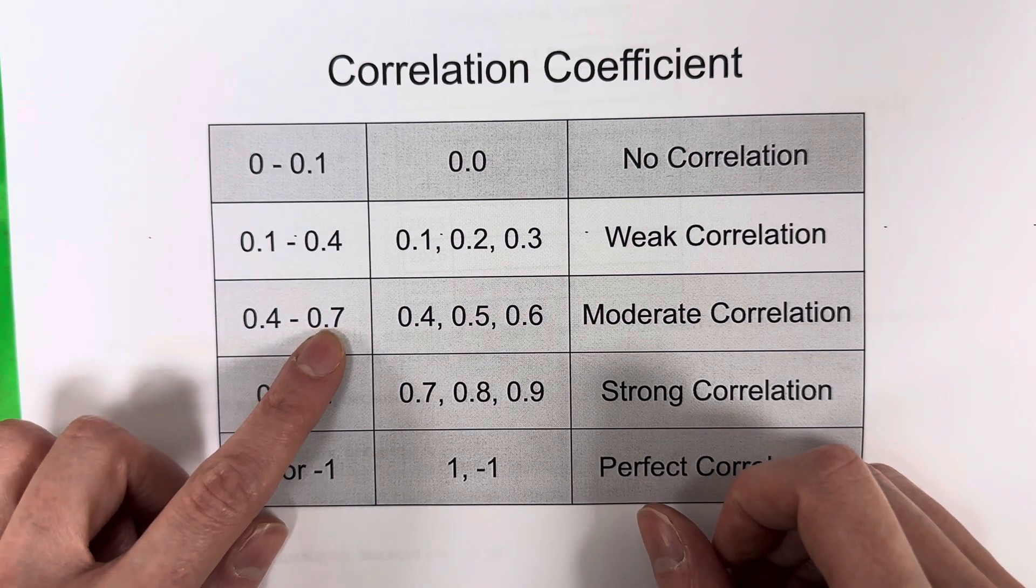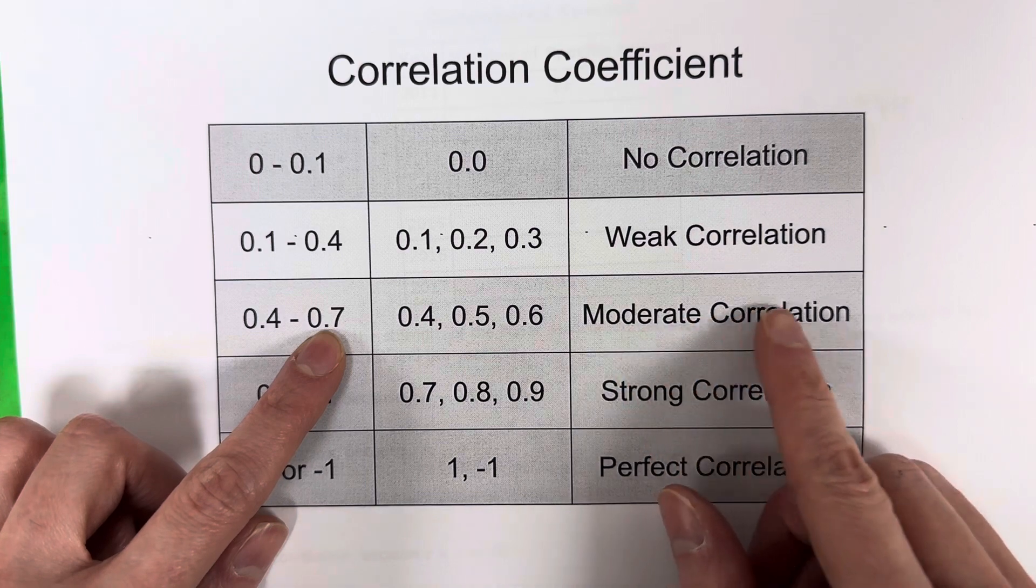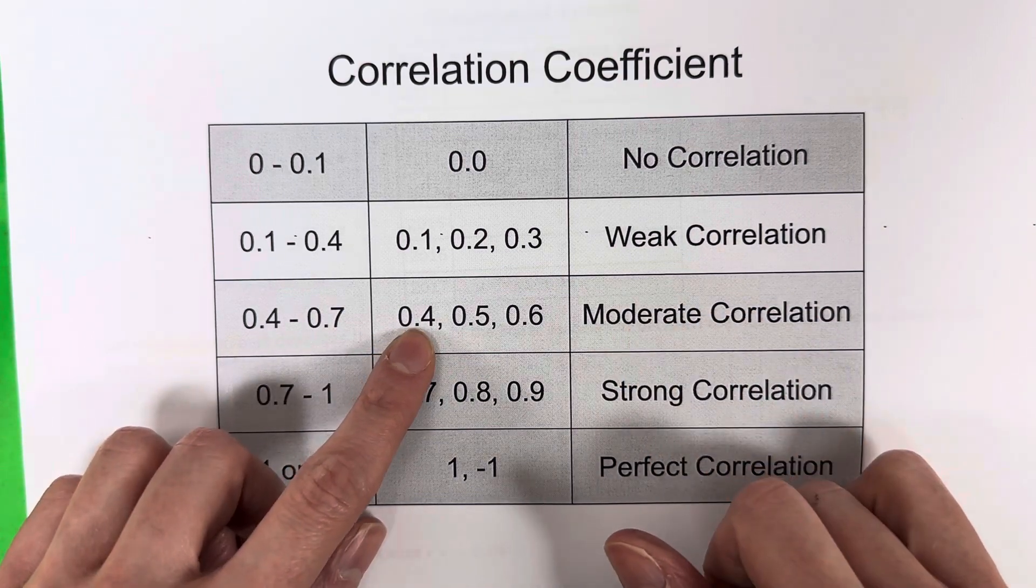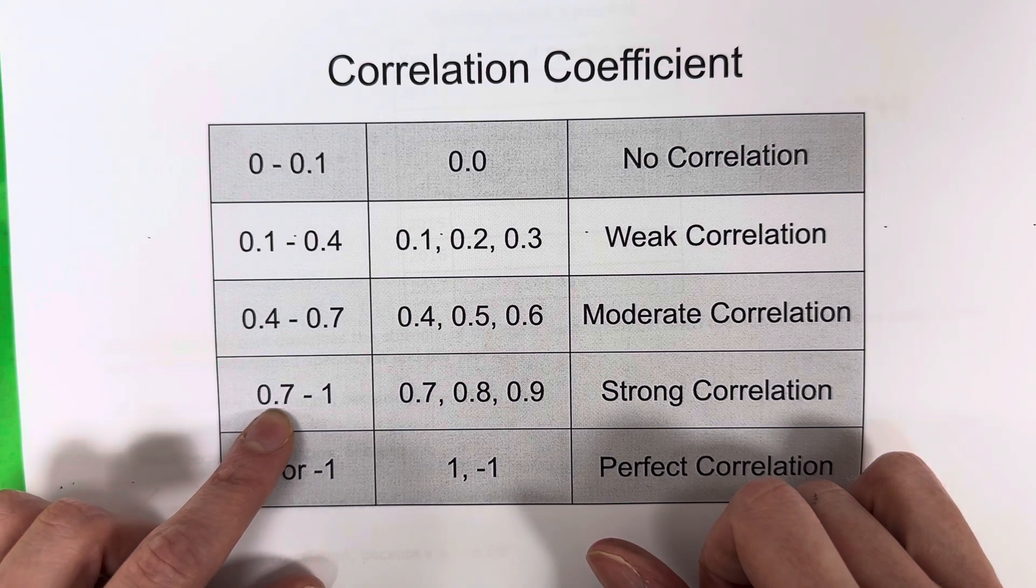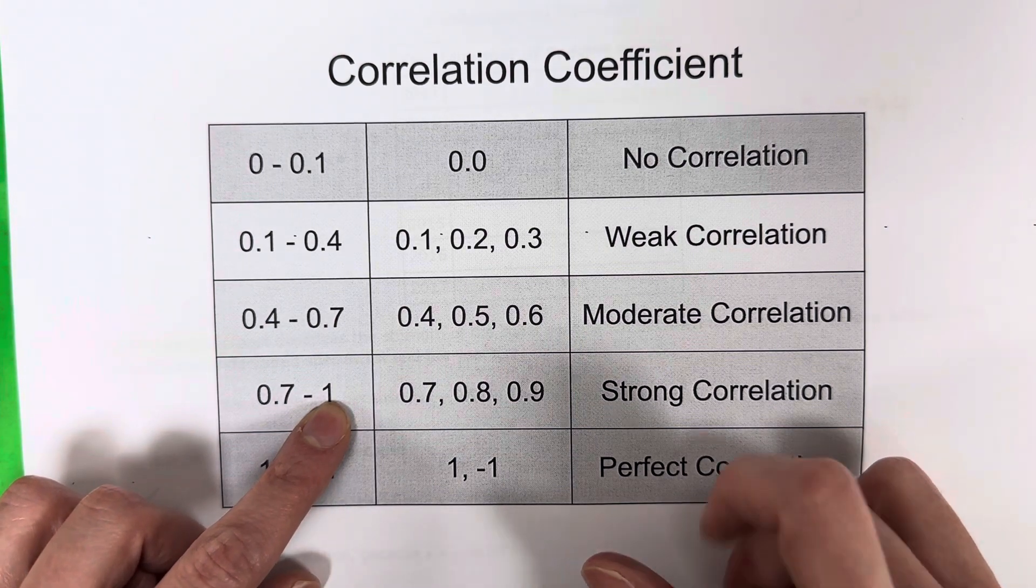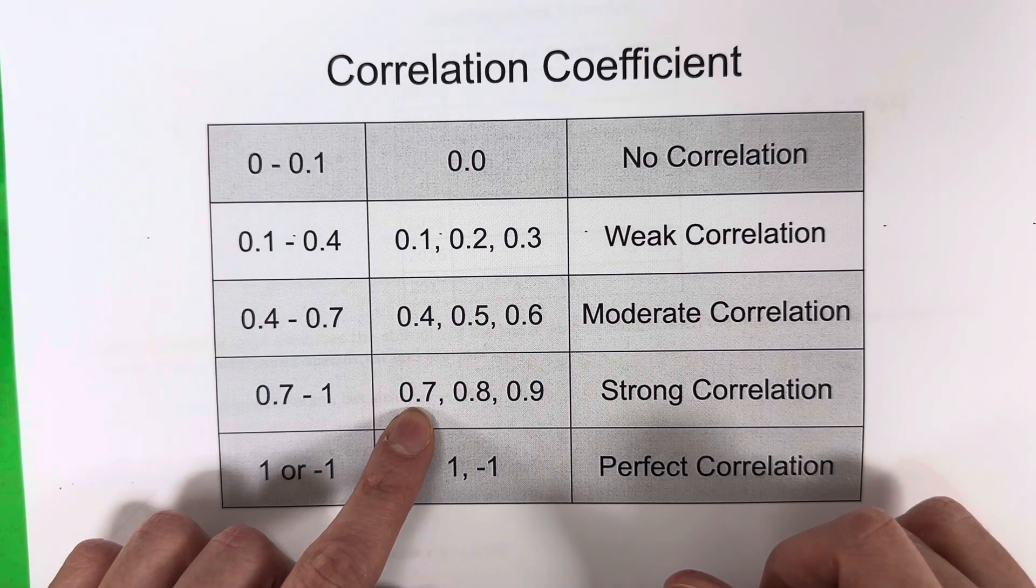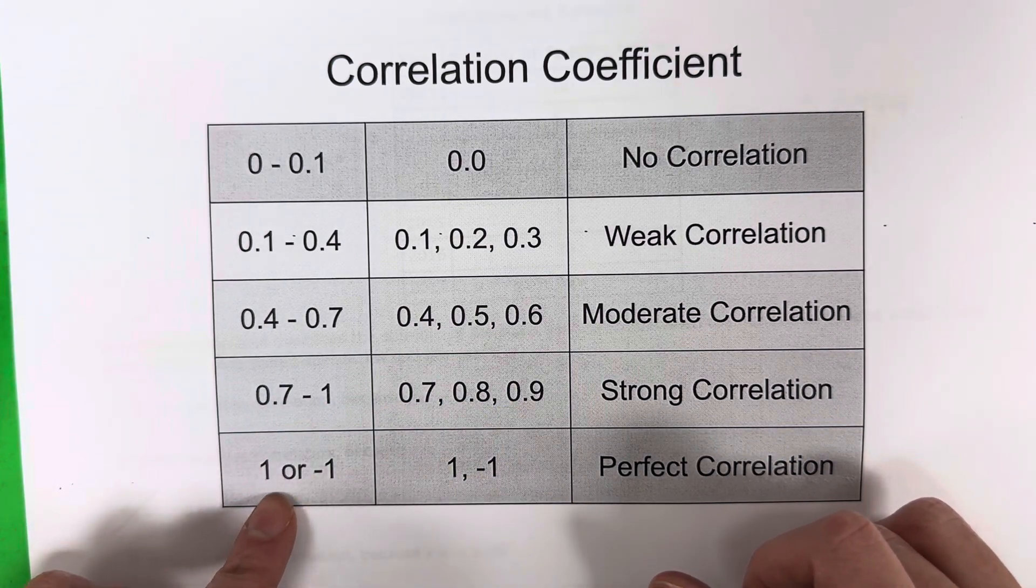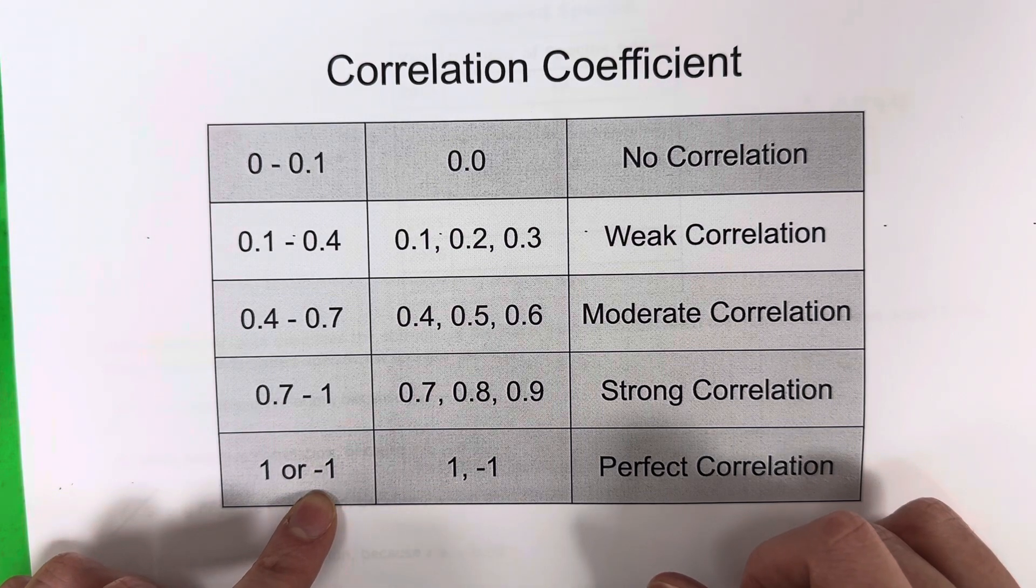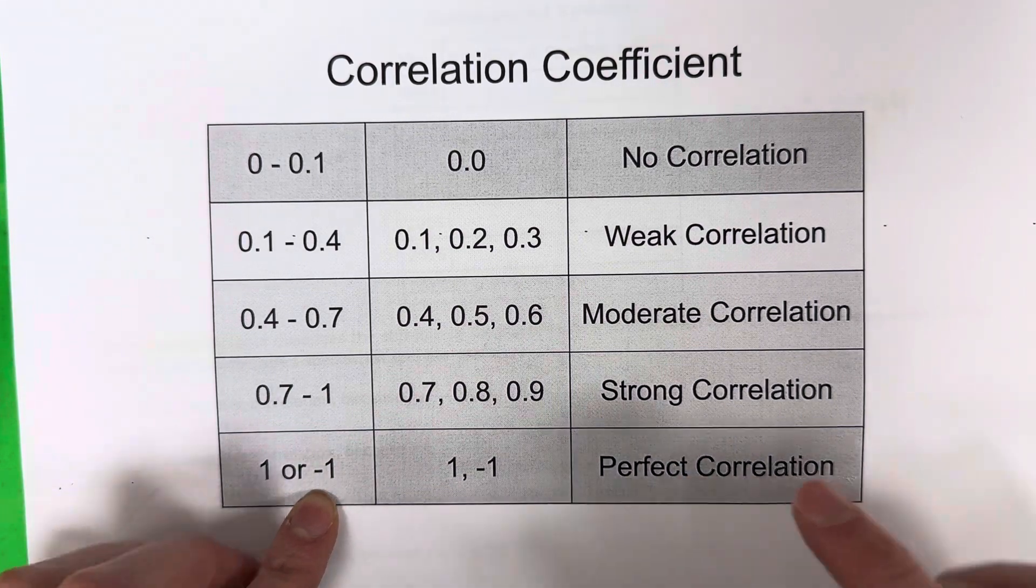Numbers between 0.4 and 0.7 are moderate correlation, which would be 0.4, 0.5, 0.6. Numbers between 0.7 and 1 are strong correlation. That would be numbers like 0.7, 0.8, 0.9. And a perfect one or perfect negative one, right? There's no decimal there would be a perfect correlation.